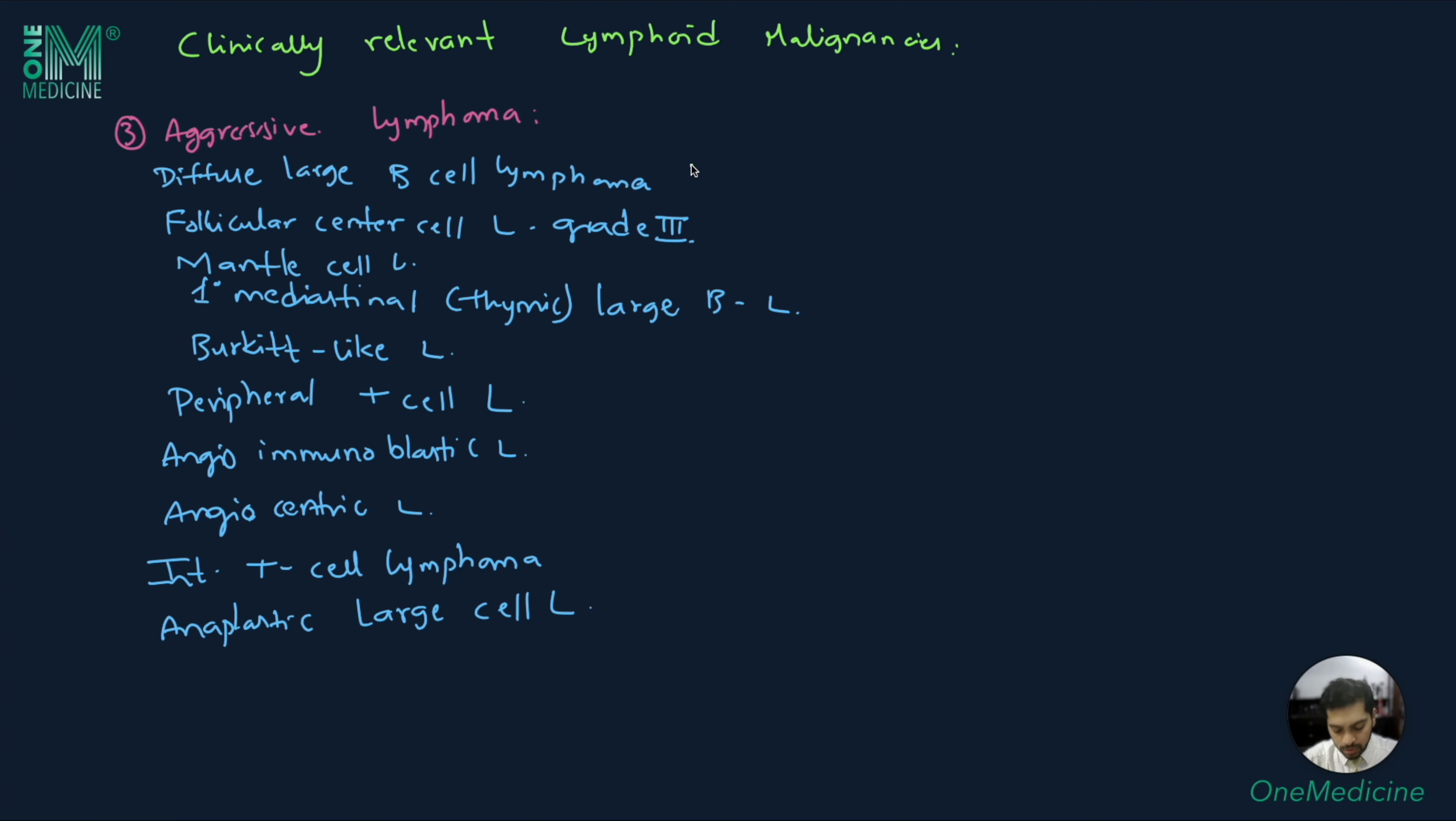Let us look at the cell of origin. Diffuse large cell lymphoma: 85% B cell origin, 15% T cell. Follicular central grade 3, mantle lymphoma, mediastinal or thymic large B cell, and Burkitt-like are all 100% B cell. Peripheral T cell and angioimmunoblastic are 100% T cell. Angiocentric is 80% T cell and 20% natural killer cells. Intestinal T cell is 100% T cell. Anaplastic is 70% T cell and 30% null cell.